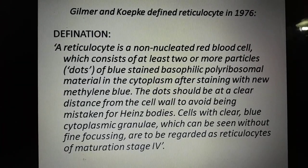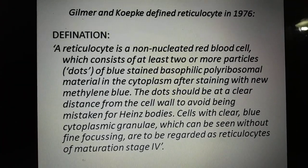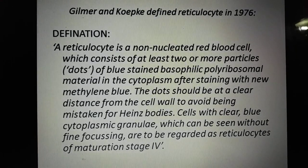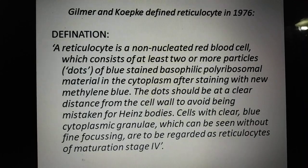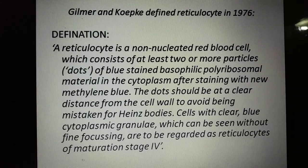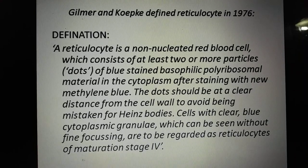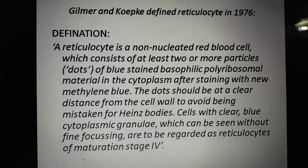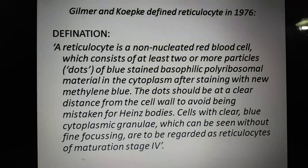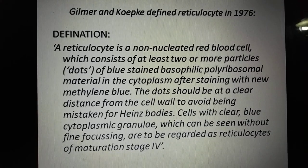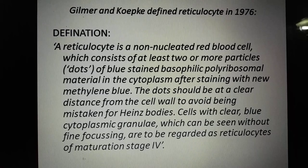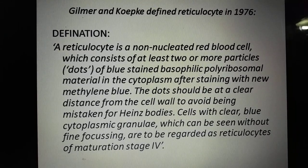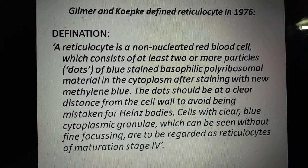In 1976, Gilmer and Koepke defined the reticulocyte. They said a reticulocyte is a non-nucleated red blood cell which consists of at least two or more particles or dots of blue-stained basophilic polyribosomal material in the cytoplasm after staining with new methylene blue. The dots should be at a clear distance from the cell wall to avoid being mistaken for Heinz bodies.